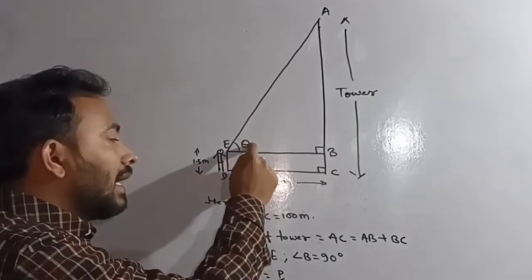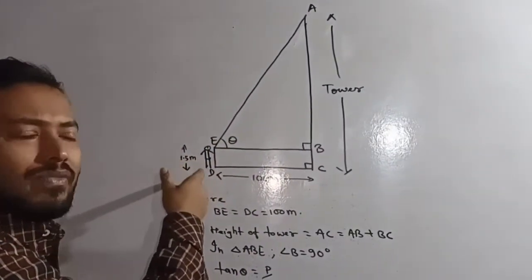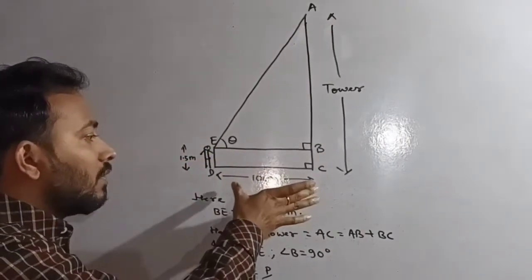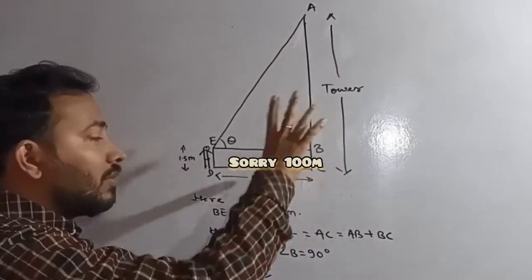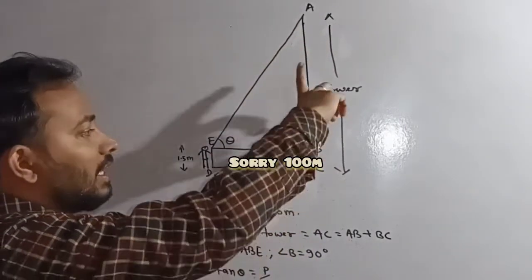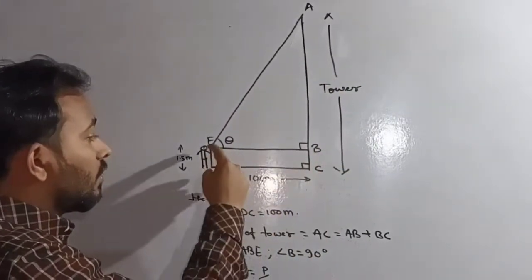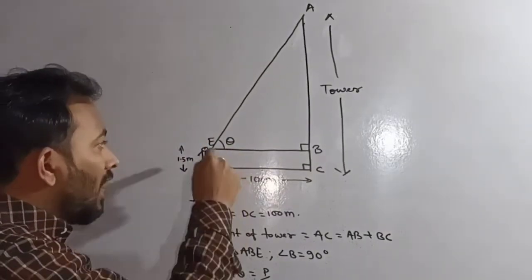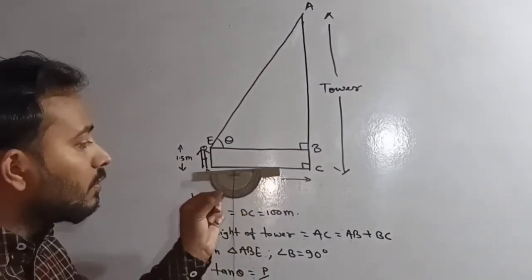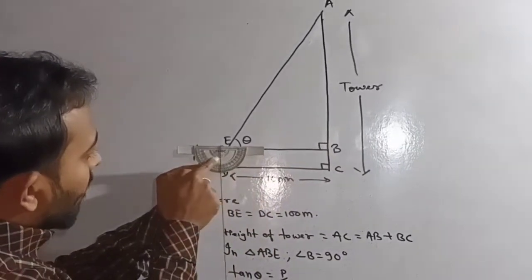We need the angle of elevation. We are standing here. Maybe our height is 1.5 meters, think like that. And you are standing 100 meters apart from your tower. Now you need to find the height of the tower. To find the height, you need to find AB plus BC. BC we already know—that is DE, the height of the observer. Now to find the angle, how are you going to find it?